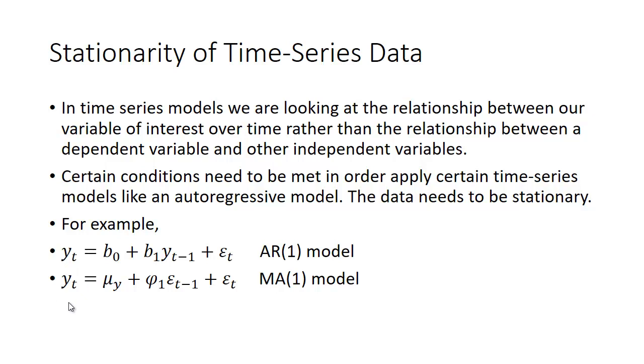In the case of a moving average model, we have some average which we call mu here, and it's going to be related to past error terms when we're forecasting the y_t. So in time series models we're looking at the relationship between our variable of interest over time, rather than the relationship between a dependent variable and some other independent variables.